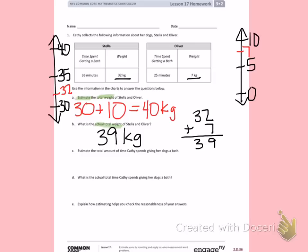Letter C. Estimate the total amount of time Kathy spends giving her dogs a bath. So again, I'm going to estimate the total amount of time. This time I'm going to talk about baths. Stella's bath is 36 minutes. I can also use the same number line I've already created to plot 36 minutes. 36 minutes would be here. So 36 is past the halfway number. That means that I would round 36 to 40.